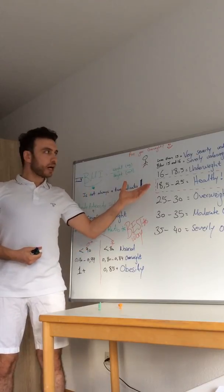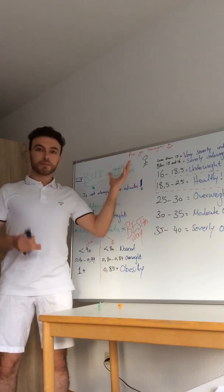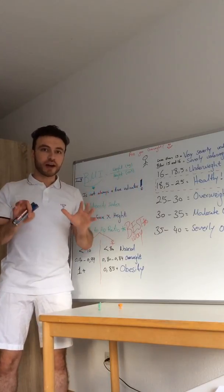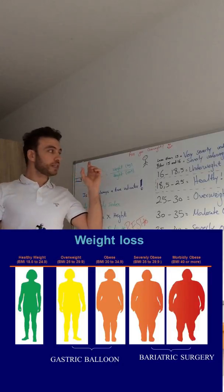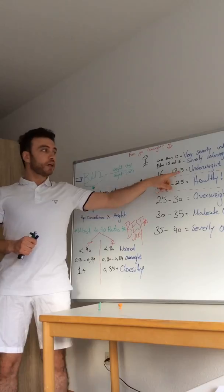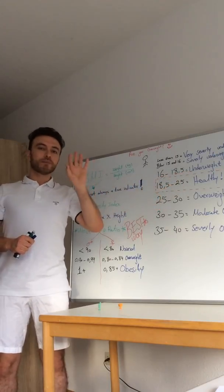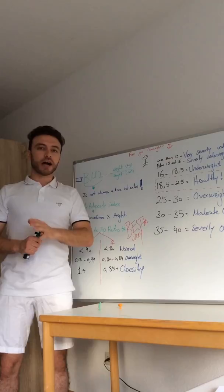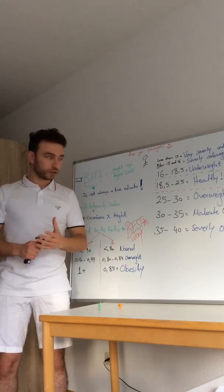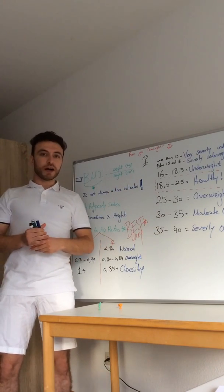If you are less than 50, you are very severely underweight. If you are between 50 and 60, you are severely underweight. And if you are between 60 and 80.5, you're underweight. And if your body mass index is 80.5 to 25, you're a normal healthy person. But if you are more than 25, you're obese.